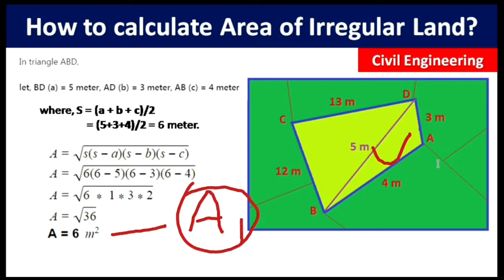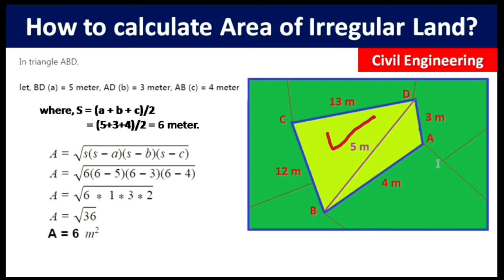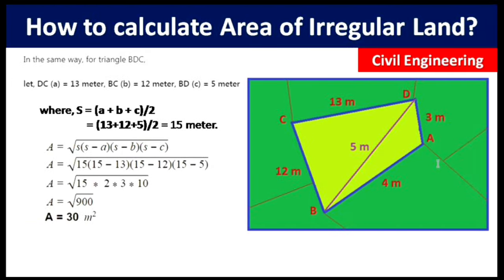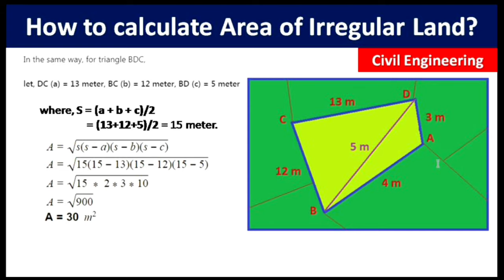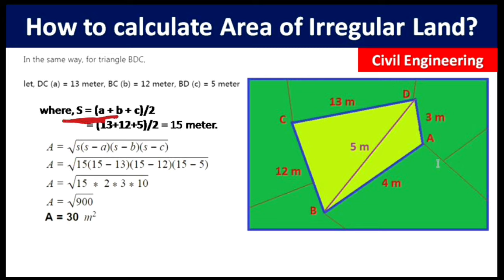Now we calculate the area of triangle BDC. In this triangle, a = 13 m, b = 12 m, and BD = 5 m (the diagonal). So s = (13 + 12 + 5) / 2 = 15 meters.